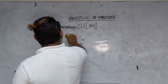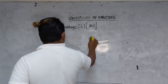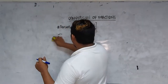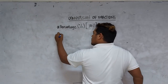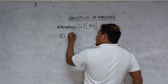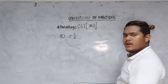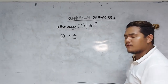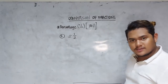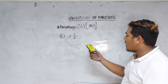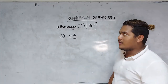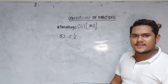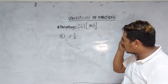A student asks: what if the fraction is a mixed fraction? That's a good question. What if it is a mixed fraction? Example number 3: we have 2 and one-half. What is the percentage equivalence of 2 and one-half? Well, that is 2.5, which gives us 250%.